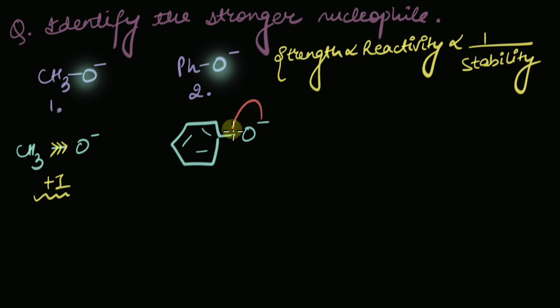The benzene ring withdraws electron density via resonance. And this negative charge would delocalize throughout the entire ring. Correct?